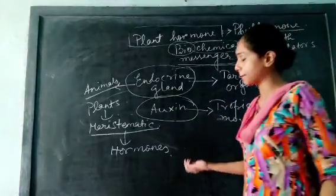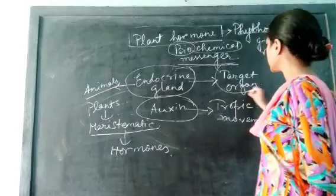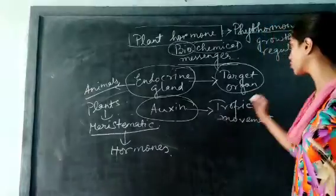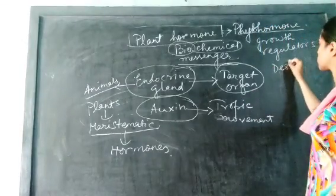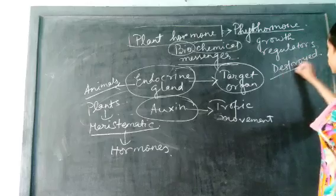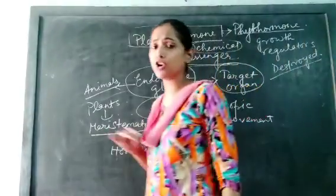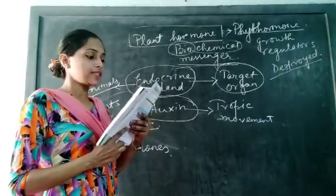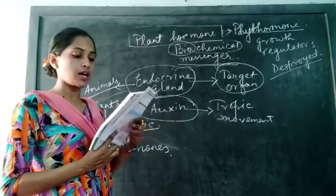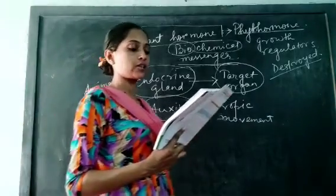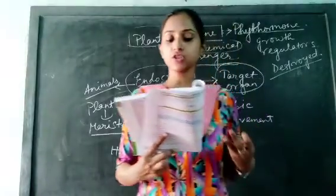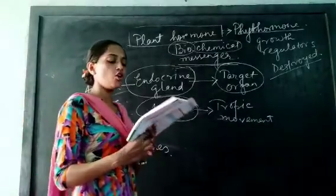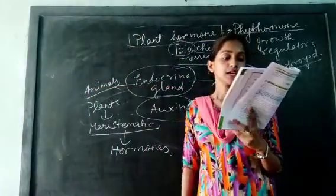Now, fate of hormones: that means what happens to the hormones when they reach the plant and they perform their function. After performing the function, the hormones get destroyed. They will not be stored in our body, they will be destroyed. In the body of plants, they will be destroyed and will be eliminated out. Now, next is what are the functions? I just told you: growth of different plant bodies like root, stem, all these things, cell division, cell differentiation, bud formation, germination, fruit formation, flower formation. All these are the functions of the plant hormone.